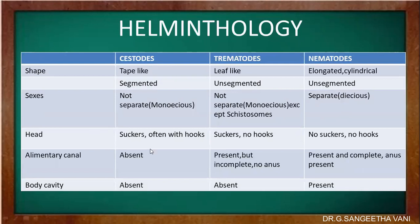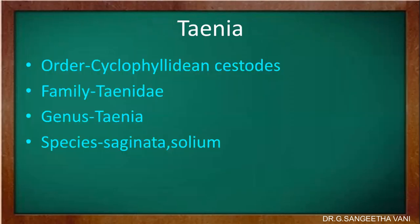Head suckers, often with hooks, are present in cestodes. Whereas in trematodes suckers are present but not hooks. Whereas in nematodes there are no suckers and no hooks. The alimentary canal is totally absent in cestodes. Whereas in trematodes it is present but incomplete with no anus. Whereas in nematodes the alimentary canal is present, complete, and anus is also present. The body cavity is not present in cestodes and trematodes, whereas in nematodes it is present.